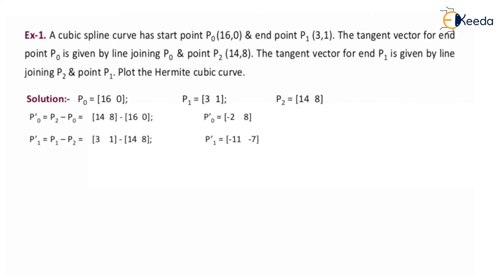So P0 is (16, 0), P1 is (3, 1), and P2 is (14, 8). For P0, x is 16 and y is 0. For P1, x is 3 and y is 1. For P2, x is 14 and y is 8. We have to calculate P0' which is P2 minus P0, so (14, 8) minus (16, 0), giving P0' = (-2, 8).